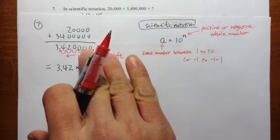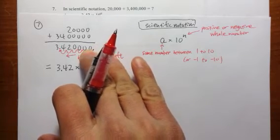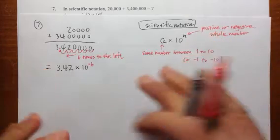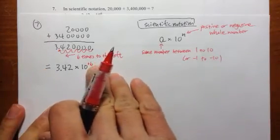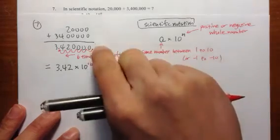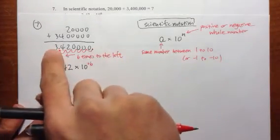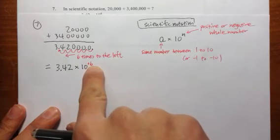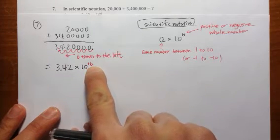Originally, you have a big number, 3,420,000. It's a big number. So the exponent is positive. That's one way to remember it. Another way to remember it is, if you move the decimal point to the left, to the left. That's positive six. It's a positive exponent.